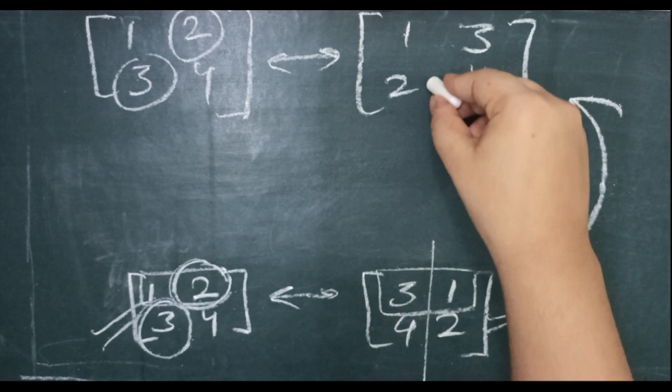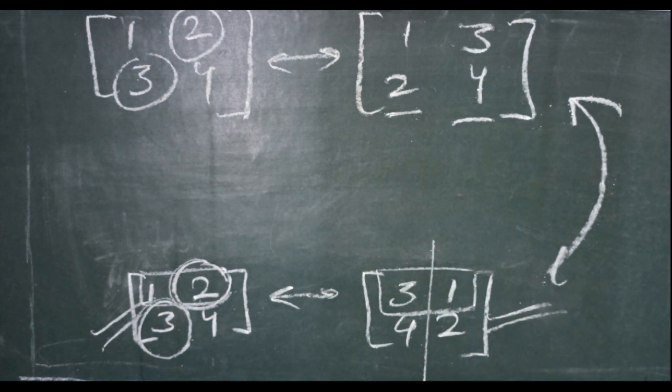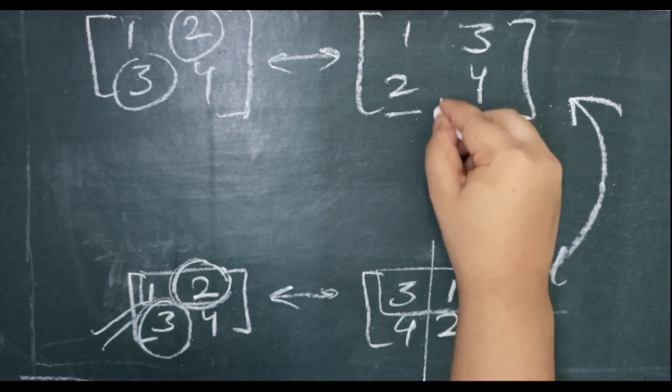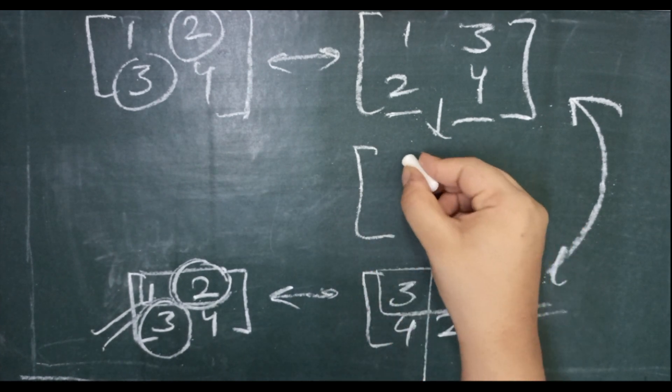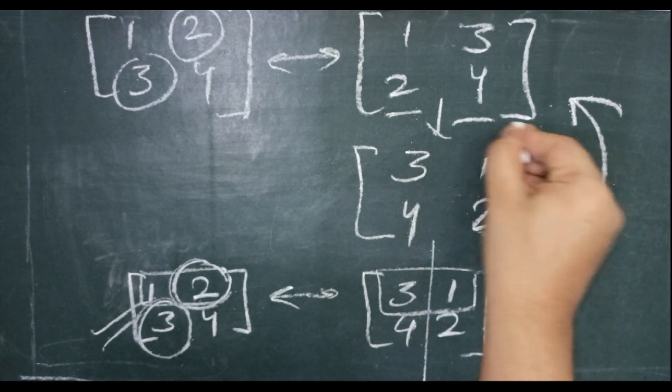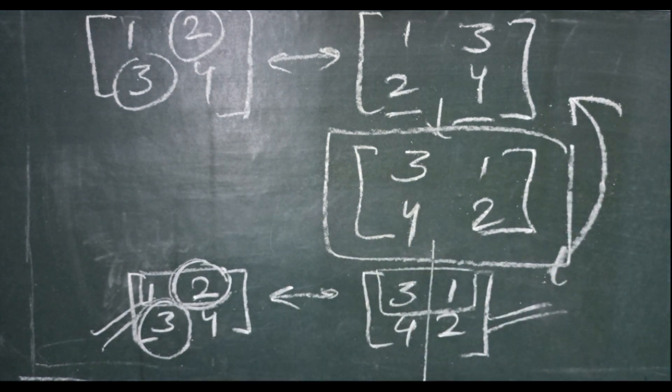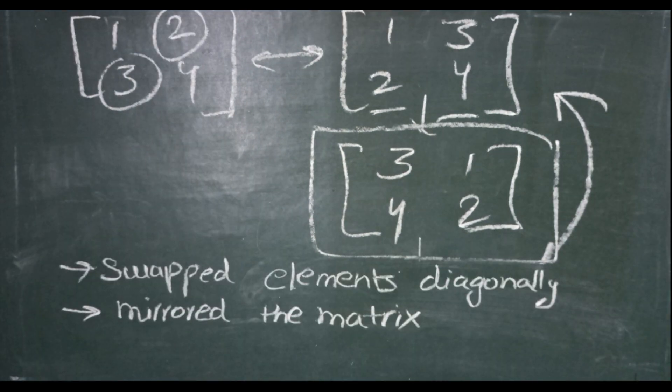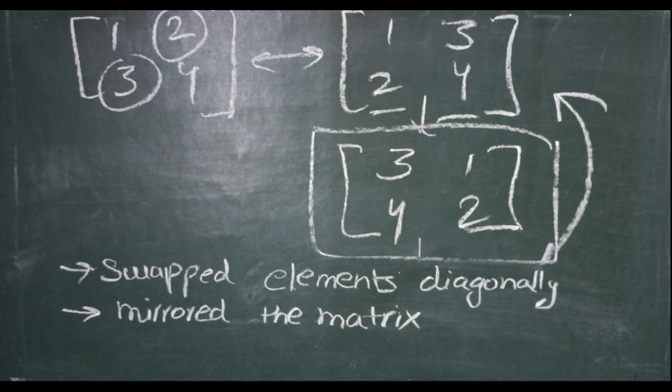Can we just make a relation in these two matrices? These are just mirror images of each other, or we can say the order of the columns is just different. So if we just change the order of their columns, we will get our final matrix. We have just swapped the elements diagonally and mirrored the matrix.